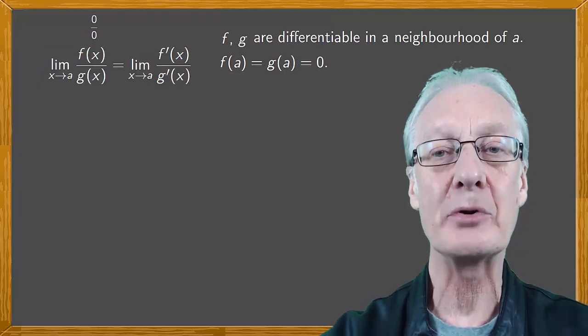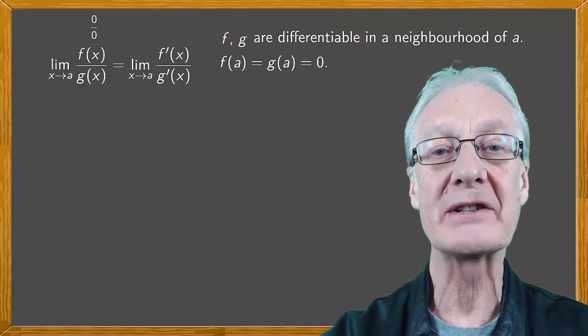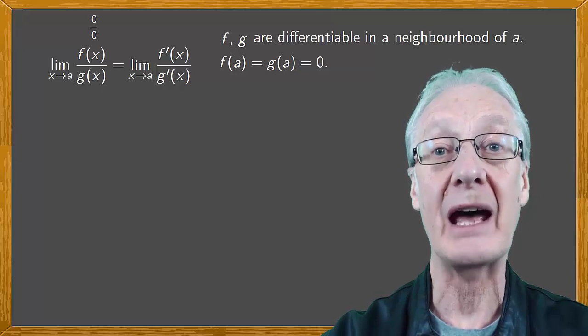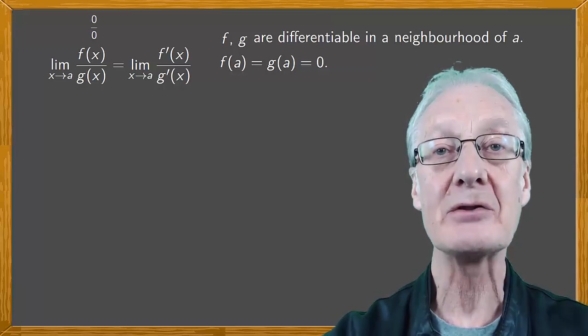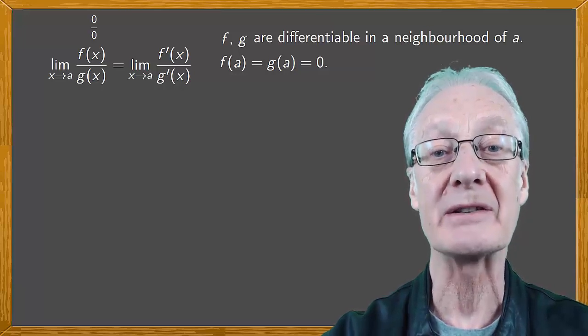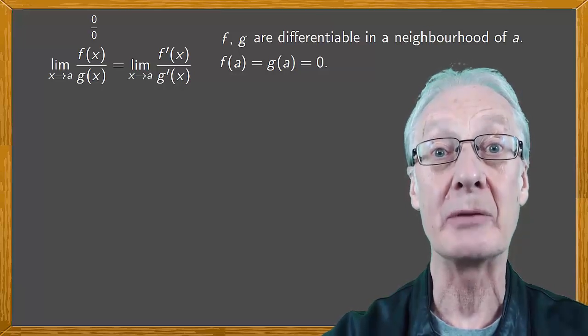How do we go about proving this? We'll do it by considering the lateral limits. That is the limits when we approach from the left and from the right. Let's look specifically at approaching from the right. The argument is the same by analogy if we approach from the left.